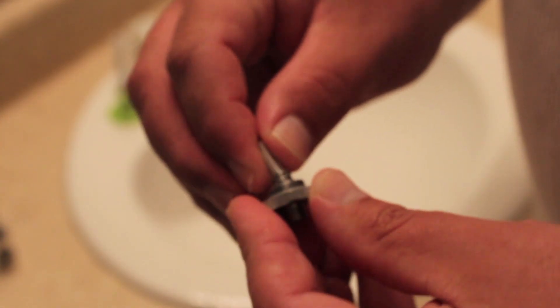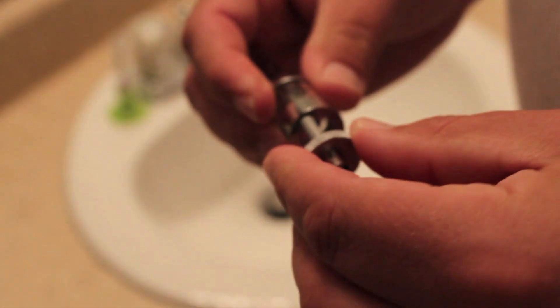Alright, now we're going to assemble this all back together without the wicks and we're going to blow it out. Just put everything, snap it all back together, screw it back in the base and just blow it out.